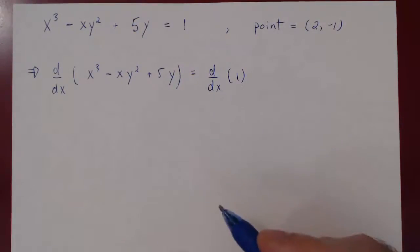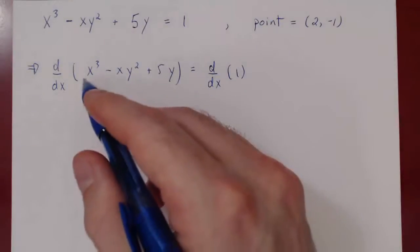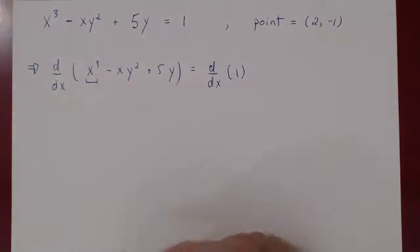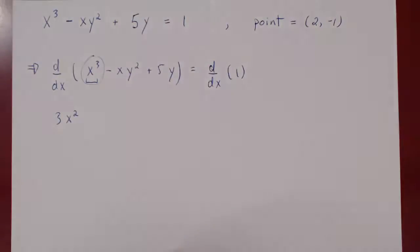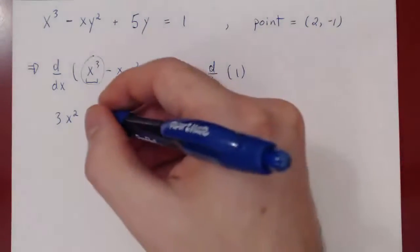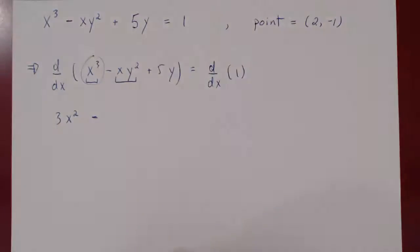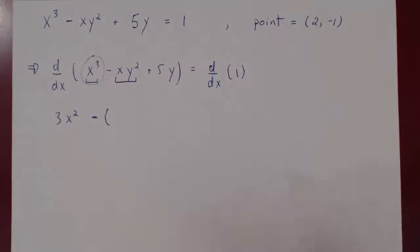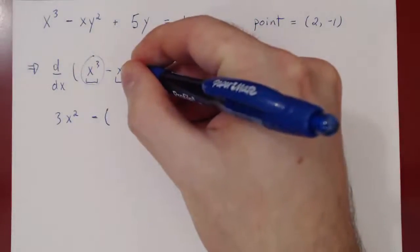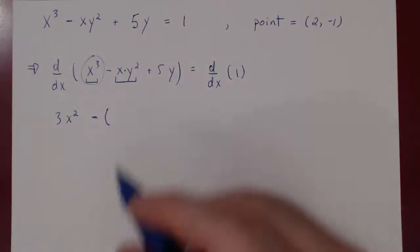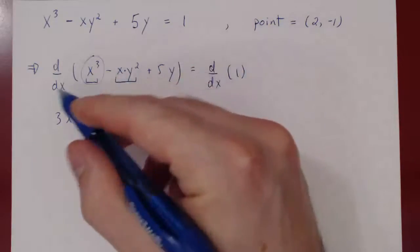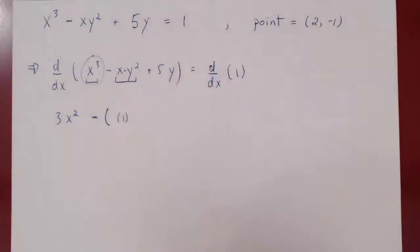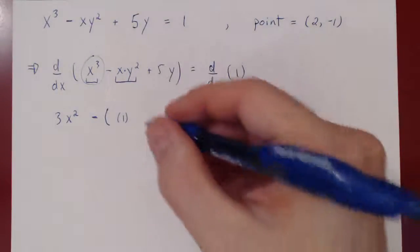Let's differentiate both sides carefully. The derivative of x cubed with respect to x is simply 3x squared. Then minus the derivative of x times y squared. Here we have to use the product rule: derivative of the first function — differentiating x with respect to x gives 1 — times the second function, y squared.